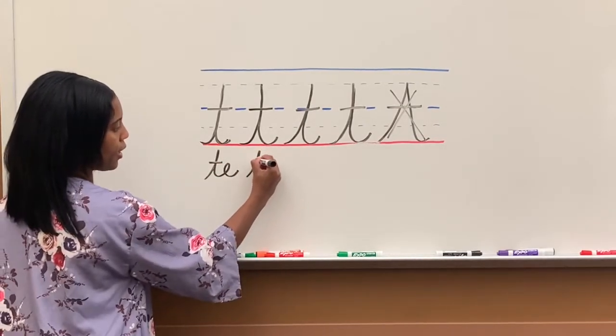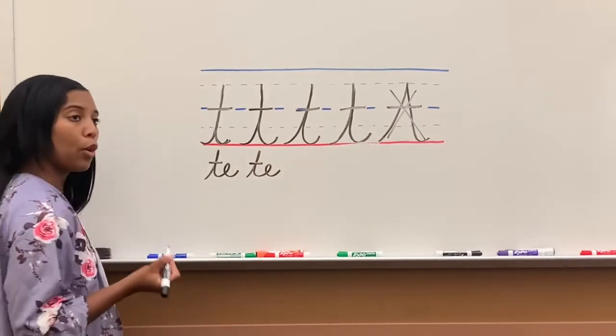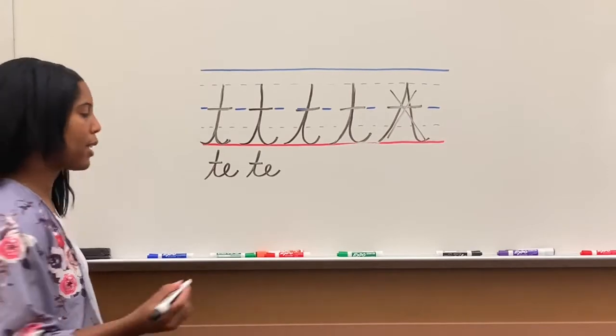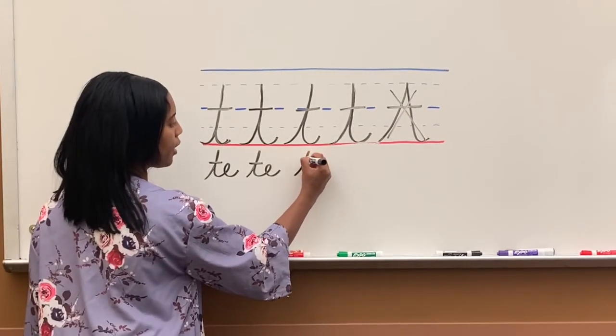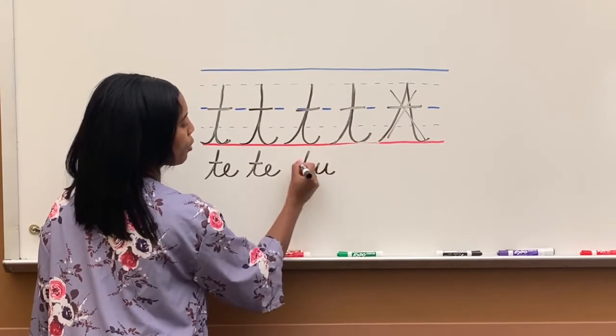Again, T, then you go into E, cross your T. When we do T-U, same thing. We're going to do T, then we do our U, then we cross.